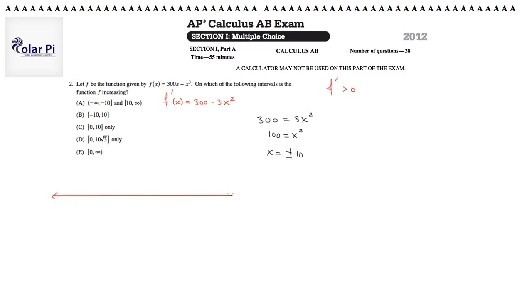So we draw a number line for f prime, and then put our two critical numbers on this number line. So let's put negative 10 here. Symmetry says that positive 10 should be somewhere here. Now these two critical numbers divide our number line into three intervals. One to the left of negative 10, one between negative 10 and 10, and another one between 10 to positive infinity.